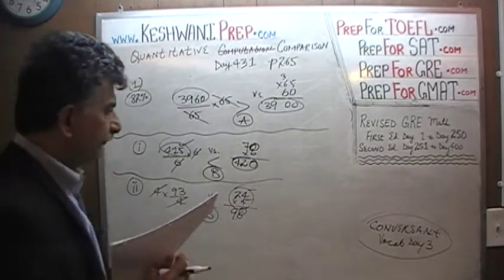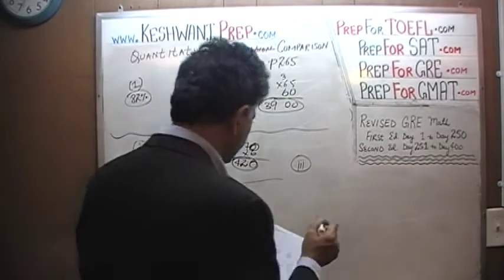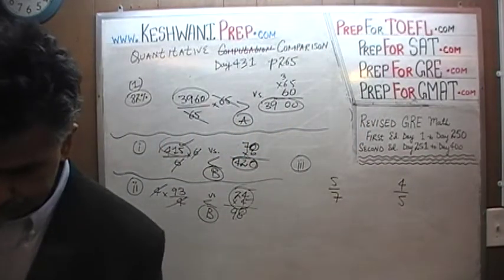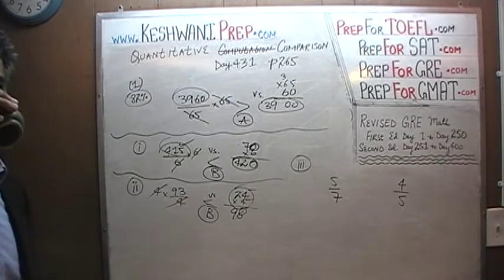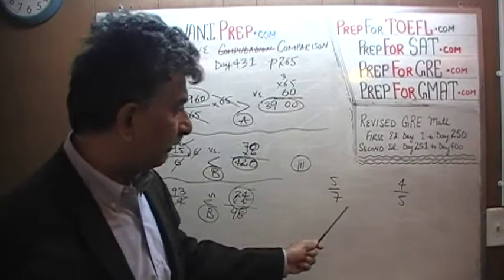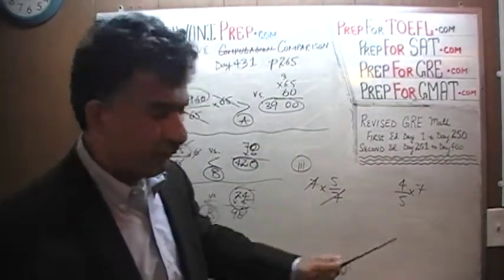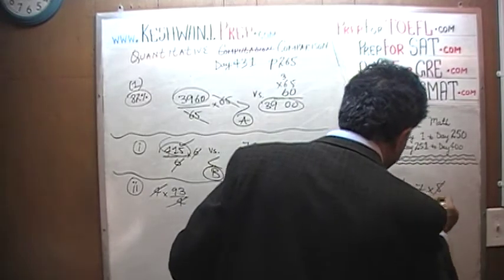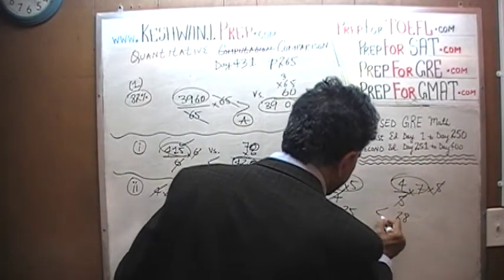Number 3: 5/7 versus 4/5. What can we do here? Try to get rid of the denominators as soon as you can. We want to get rid of the 7 from the bottom — multiply both columns by 7. We still have a 5 in the denominator of the second column, so multiply both columns by 5. That gets rid of the 5. We end up with 5 times 5, which is 25, and 4 times 7, which is 28. 28 is bigger. The answer is B.